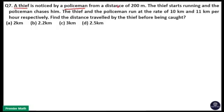A thief is noticed by a policeman from a distance of 200 meter. The thief starts running and the policeman chases him. The thief and policeman run at the rate of 10 kilometer and 11 kilometer per hour respectively. Find the distance traveled by the thief before being caught.